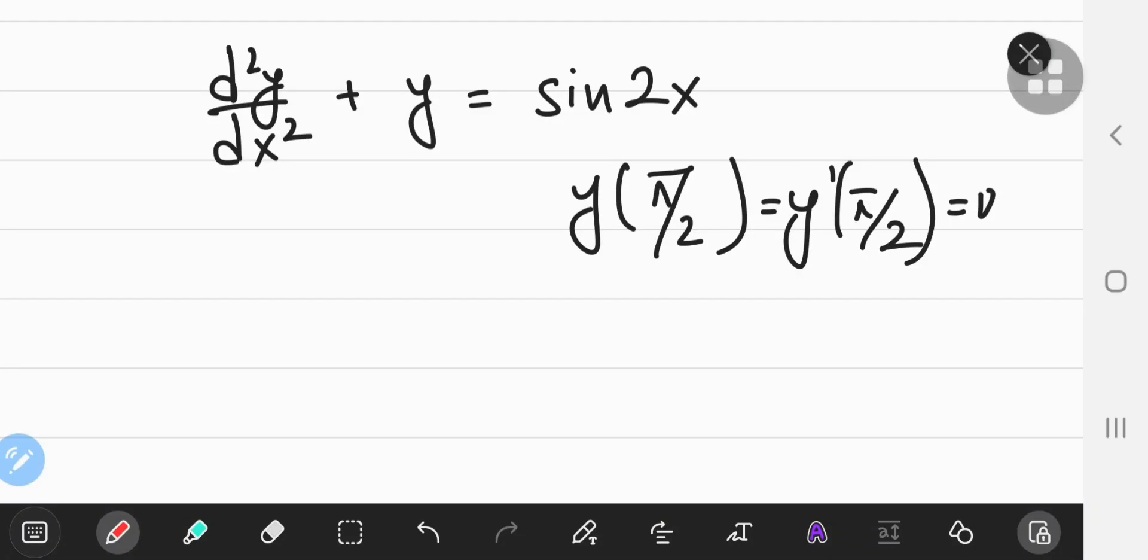We have another inhomogeneous ordinary differential equation in front of us, which is the second derivative of y plus y equal to sine 2x, and we have a couple of initial value conditions as well.